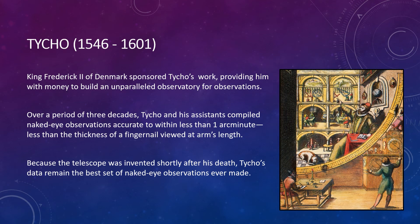King Frederick II of Denmark decided to sponsor Tycho's ongoing work, providing him with money to build an unparalleled observatory for naked-eye observations. Over a period of three decades, Tycho and his assistants compiled naked-eye observations accurate to within less than one arc minute — that's less than the thickness of a fingernail viewed at arm's length — with no telescopes. Because the telescope was invented shortly after his death, Tycho's data remains the best set of naked-eye observations ever made. Despite the quality of his observations, however, Tycho never succeeded in coming up with a satisfying explanation for planetary motions.